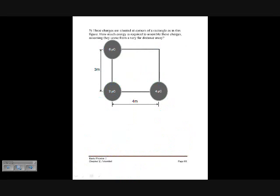Three charges are at the corners of a rectangle. We want the energy required to assemble these charges, assuming they come from very far away. The work to assemble charges equals Q times delta V. We bring them in one at a time. First, bringing in Q1 when no other charges are present: the work W1 equals Q1 times delta V, but since there are no other charges, the potential is zero, so W1 equals zero.